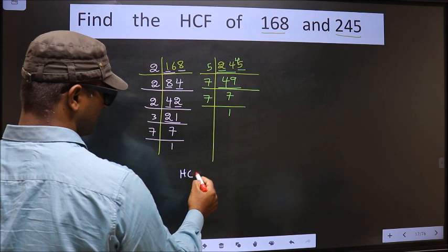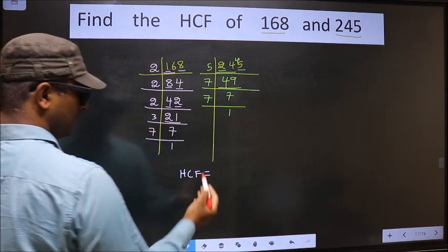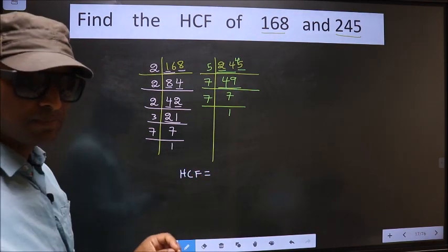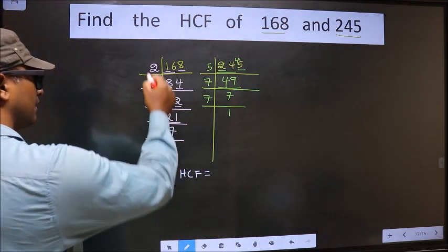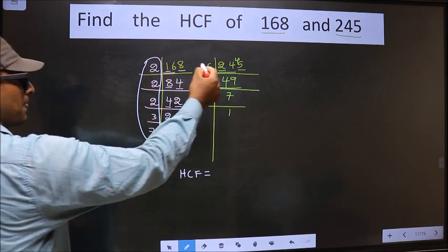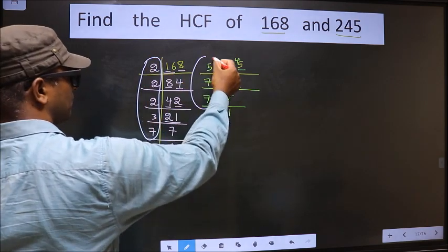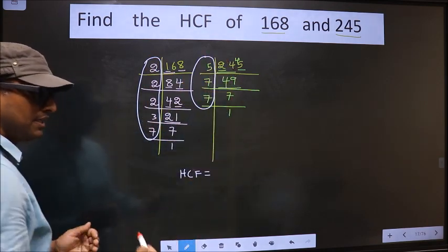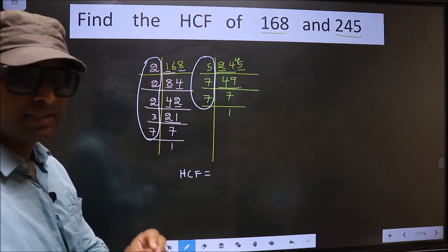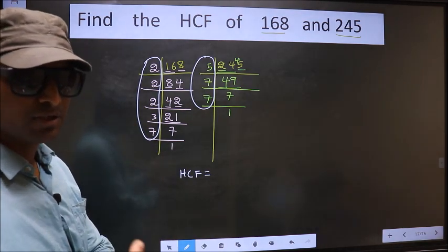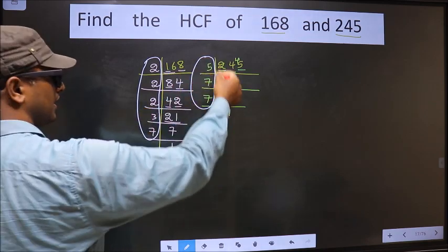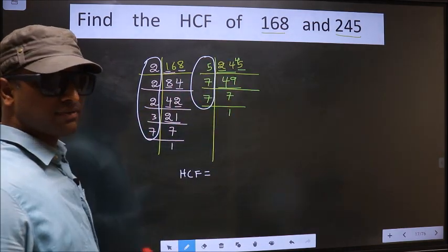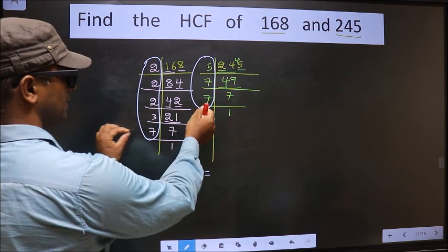So our HCF is the product of numbers which should be present here and also here. I repeat, HCF is the product of numbers which should be present here and also here. So now let us find the numbers which are present in these 2 places.